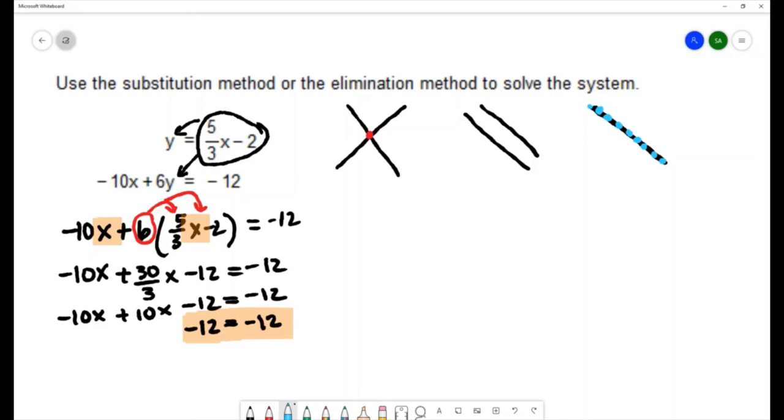So whenever all of the variables cancel out like it did in this problem we know that our system is in one of these two states where we have parallel lines or two lines that are right on top of each other.